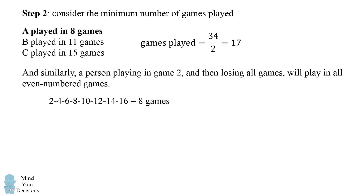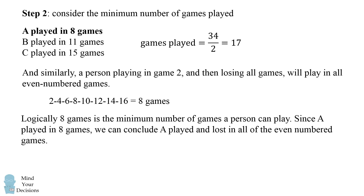Now notice: A played in exactly 8 games. Logically, 8 games is the minimum number of games a person can play. Since A played in 8 games, we can conclude A played and lost in all of the even-numbered games. Thus, A lost the fourth game.